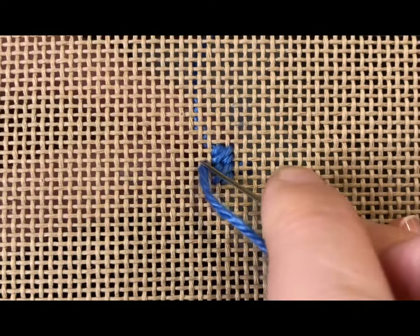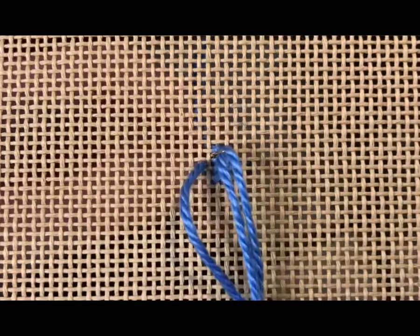Now continuing the pattern upward starting with a tent stitch that's going to line up with my tent stitch. So eventually I'll have a diagonal line of tent stitches and a diagonal line of long stitches.